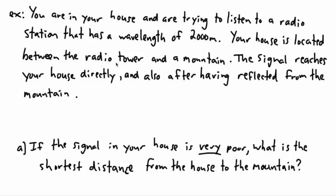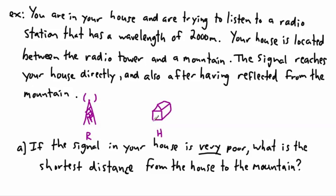Your house is located between a radio tower and a mountain — that's the key thing here. So I'm going to draw the situation. I need a radio tower, which emits the signal — I'll call it R for radio tower. Then you have your house, and then some mountains over here, which I'll mark as M for mountain.